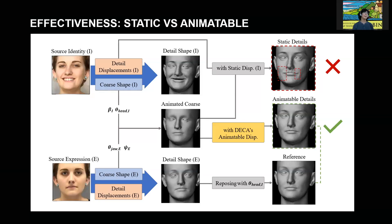We would also like to show the effect of DECA's animatable details. Given images of source identity i and source expression e, DECA reconstructs the detail shapes and animates the detail shape of i with the expression of e. This synthesized expression appears nearly identical to the reconstructed same subject's reference detail shape. Using the reconstructed details of i without animation and animating the coarse shape only results in visible artifacts.